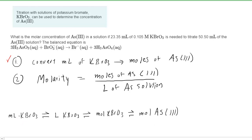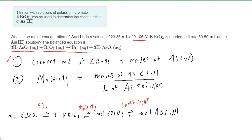We'll start out with the milliliters of KBrO3, and our first step will be to convert that into the standard unit of liters — that's a simple standard unit conversion. Once we have the liters of KBrO3, we can convert that into the number of moles of KBrO3 using the molarity of that substance, which is given in the question. Finally, once we have the moles of KBrO3, we can convert that into moles of the arsenic ion using the coefficients from the balanced reaction, which was also given to us.